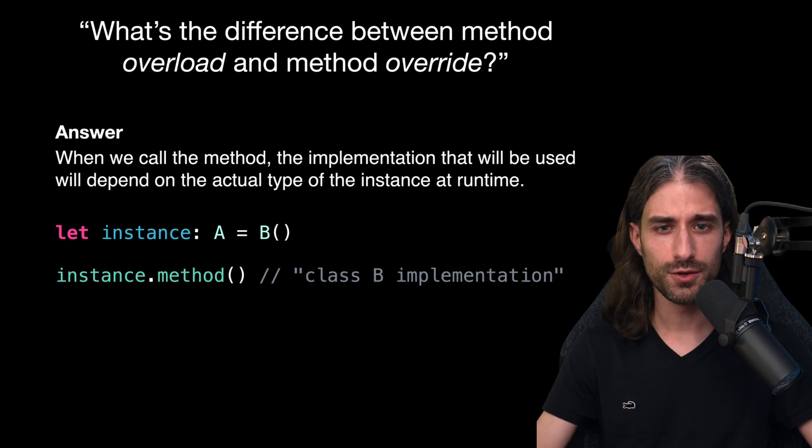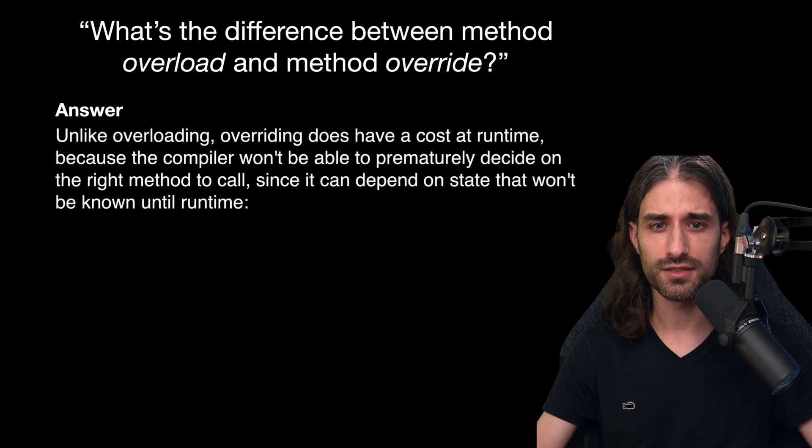So here's how it would look. You can see that even though the variable instance is statically typed to class A, the implementation that will be called will actually be the implementation of class B because the actual instance stored in the variable is of class B. But here it's important to note that unlike overloading, overriding does have a cost at runtime because the compiler won't be able to prematurely decide on the right method to call since it can depend on things that won't be known until runtime.